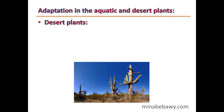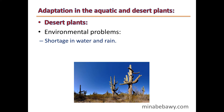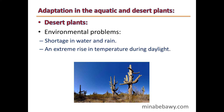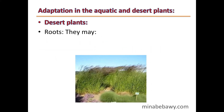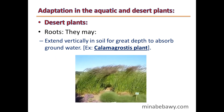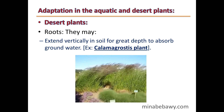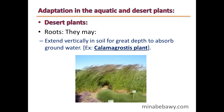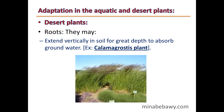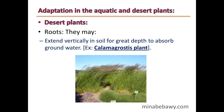Desert plants face several environmental problems: shortage of water and rain, an extreme rise in temperature during daylight, and strong winds. The roots of desert plants may extend vertically deep into the soil to absorb ground water, such as in Calamagrostis plants.